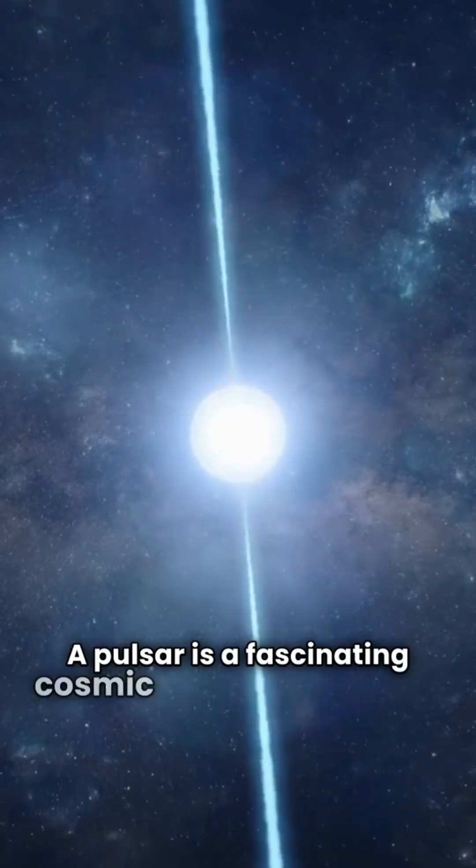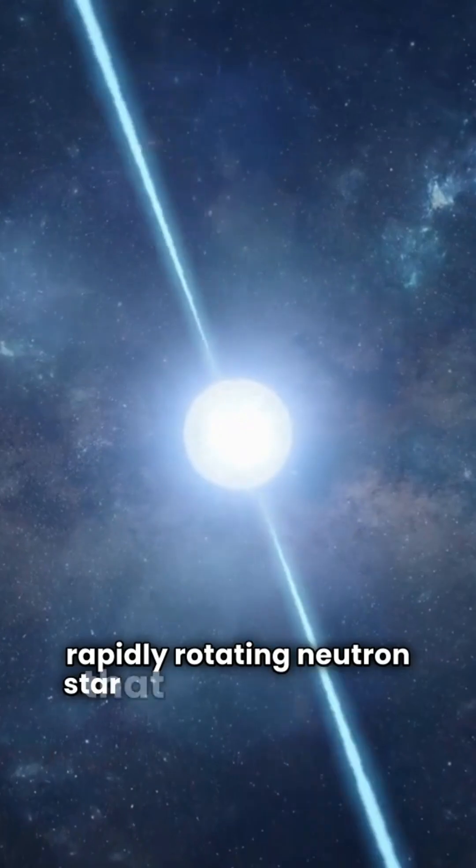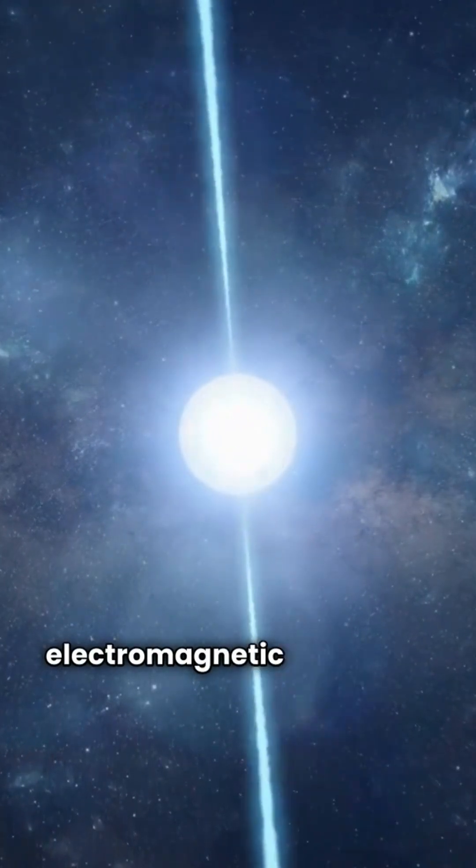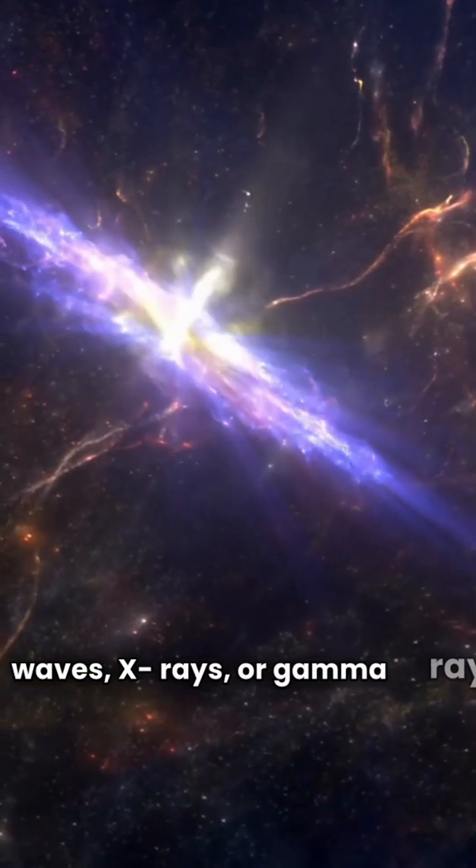A pulsar is a fascinating cosmic phenomenon, a rapidly rotating neutron star that emits beams of electromagnetic radiation, often in the form of radio waves, x-rays or gamma rays.